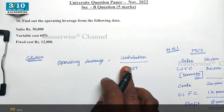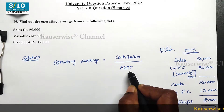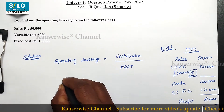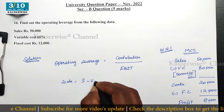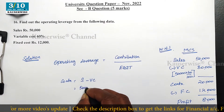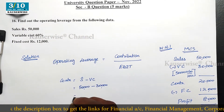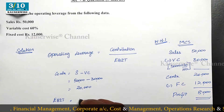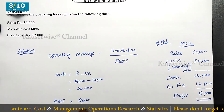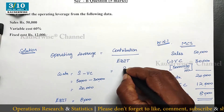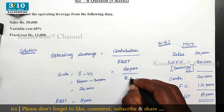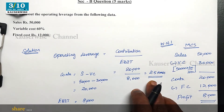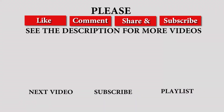Now we can see the solution. The formula for operating leverage is contribution divided by EBIT. Contribution equals sales minus variable cost: 50,000 minus 30,000 equals 20,000. EBIT is 8,000 — that is profit before interest and tax. Substituting: 20,000 divided by 8,000 equals 2.5 times. This is the answer — the operating leverage is 2.5 times. This is the way to calculate operating leverage.